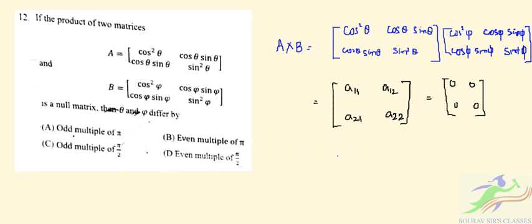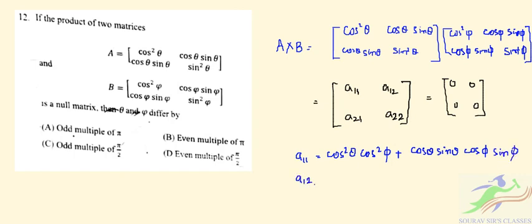So a11 will be cos²θ · cos²φ + cosθ sinθ · cosφ sinφ. Then a12 will be cos²θ · cosφ sinφ + sin²φ · cosθ sinθ.